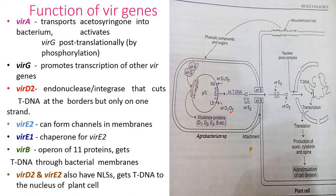In the case of the vir D gene, the D2 gene is an endonuclease that cuts the T-DNA at the border, but only on one strand. The vir E2 forms a channel in the membrane, while vir E1 acts as a chaperone for E2. The vir B operon of 12 proteins gets the T-DNA through the bacterial membrane, where D2 and E2 transfer the T-DNA to the nucleus of the plant cell.